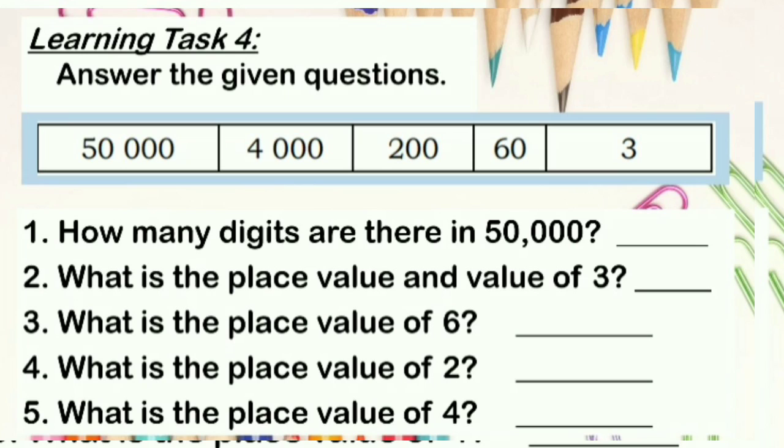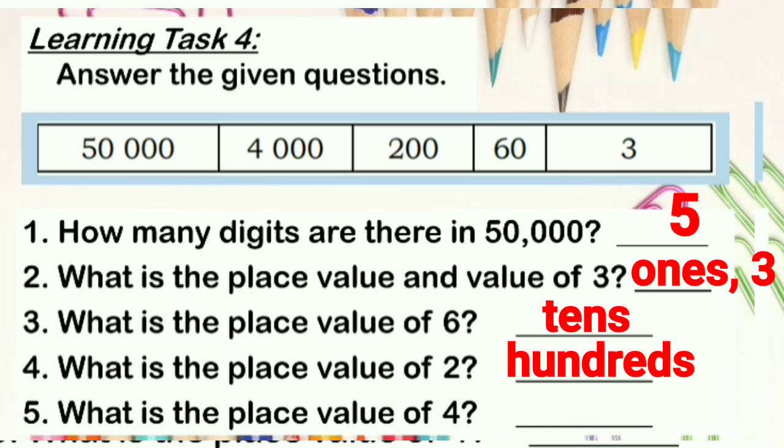Let's move on to learning task 4. How many digits are there in 50,000? What is the place value and value of 3? What is the place value of 6? How about the place value of 2? And last but not least, the place value of 4.